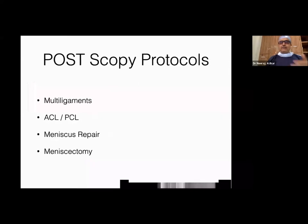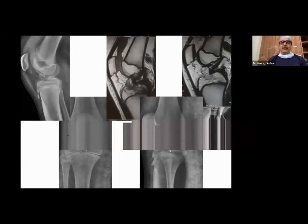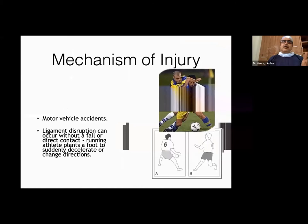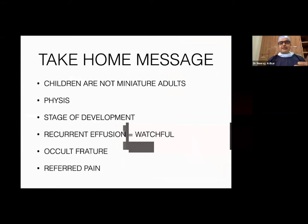After ACL reconstruction, patients need extended rehabilitation. If it is a bony avulsion — where the ACL is avulsed with a bone fragment — it can be fixed with a screw. In kids, we need to avoid the growth plate during fixation. Multiple ligament injuries are routinely seen in soccer, kabaddi, and contact sports players due to high physical demands and personal contact.